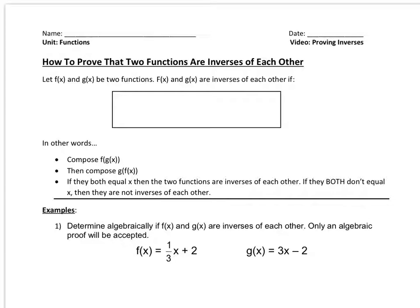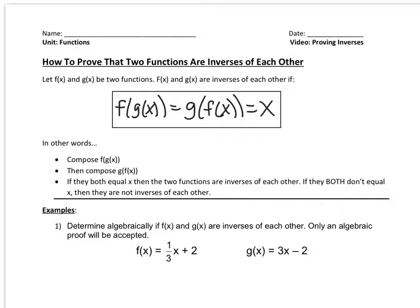Here's the textbook definition. Let f of x and g of x be two functions. f of x and g of x are considered inverses of each other if both f of g of x and g of f of x both equal x. So what this notation means — those double equal signs — means that both of these have to equal x. So if this definition is a little bit confusing, let's talk about it in simpler words.